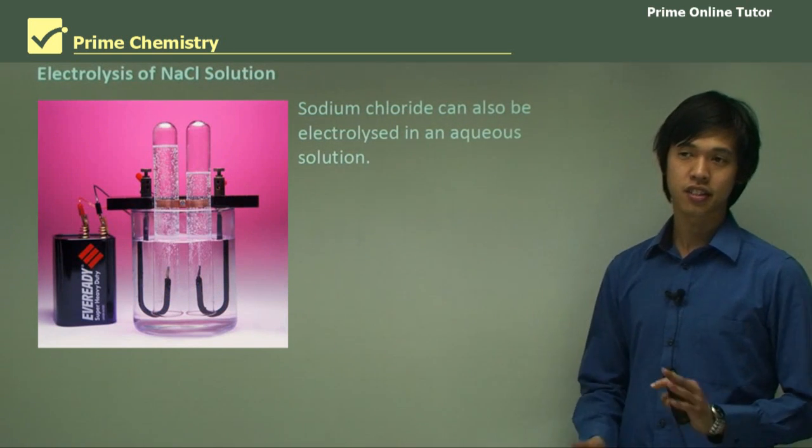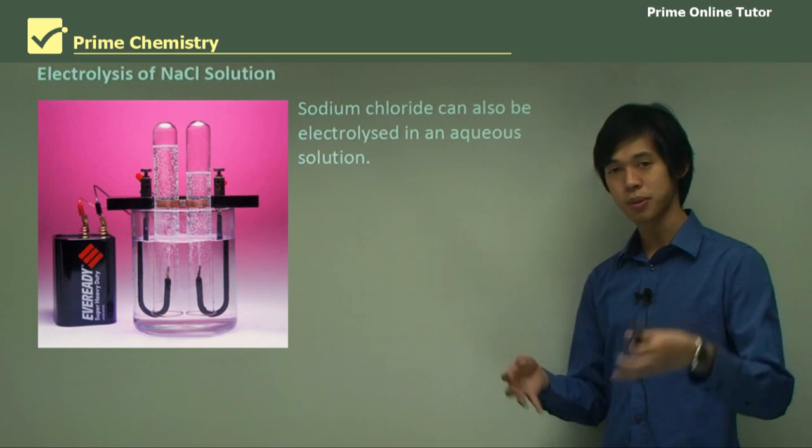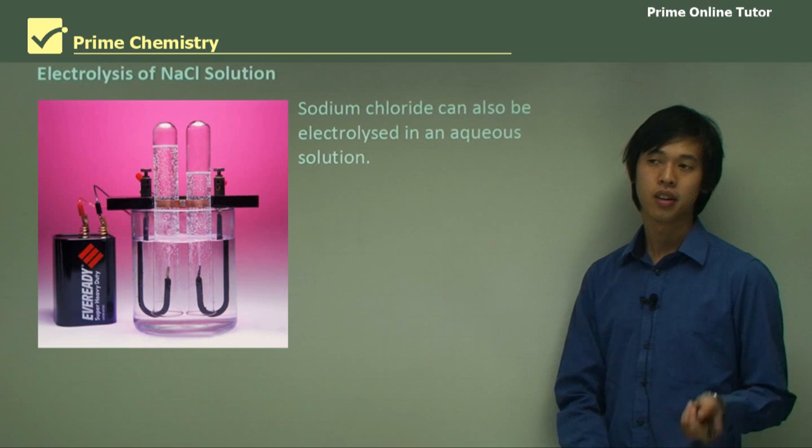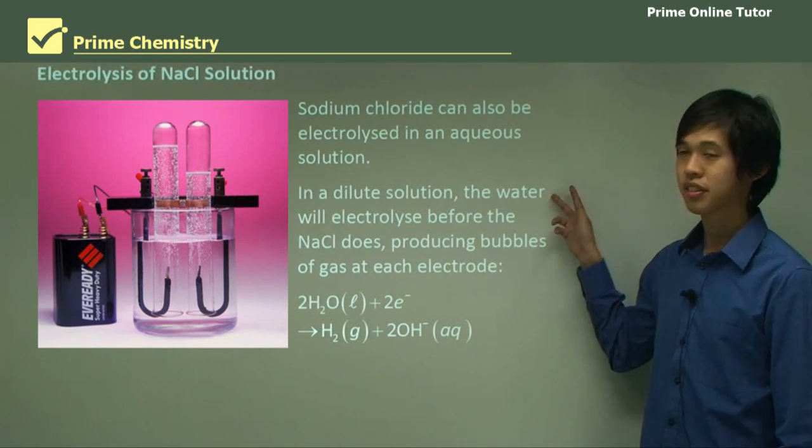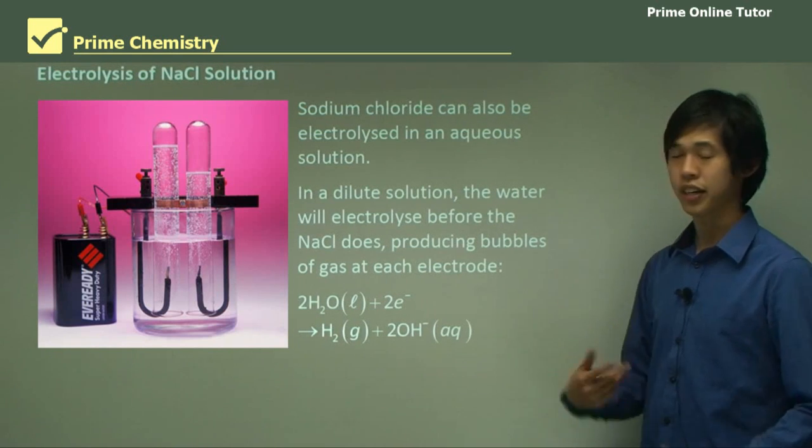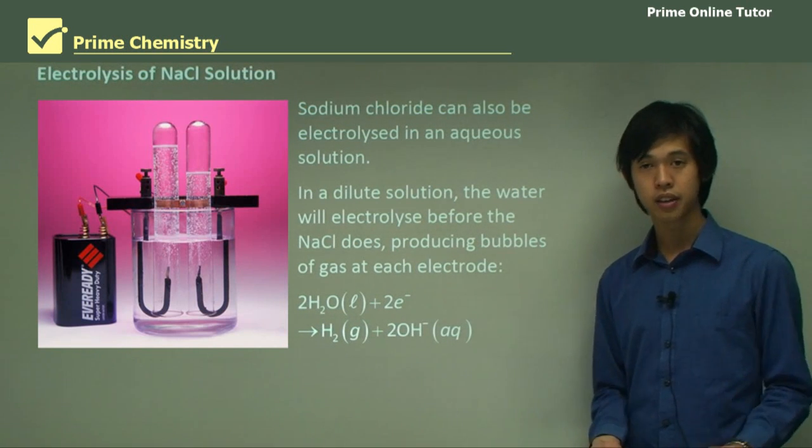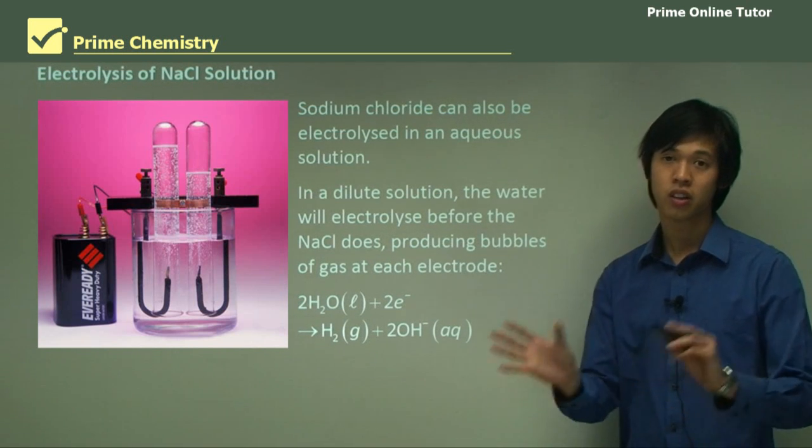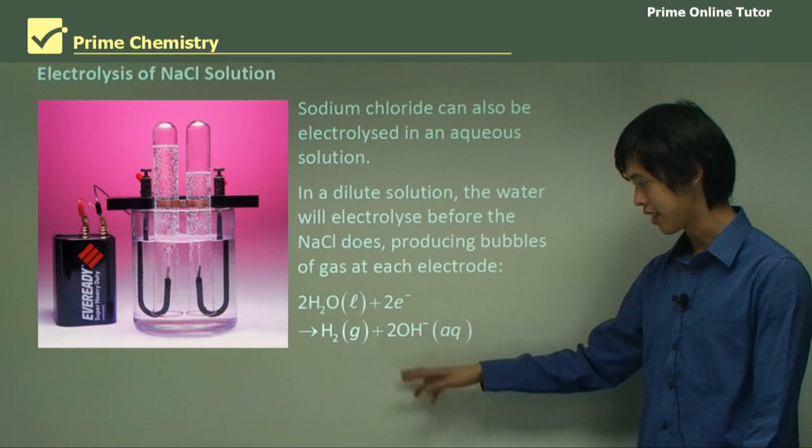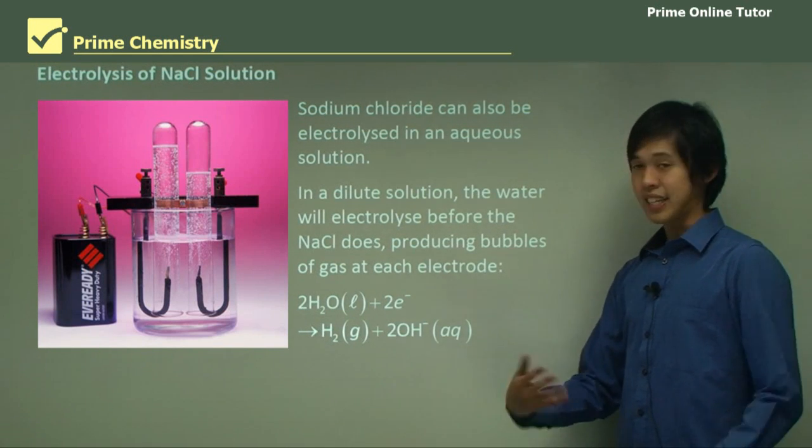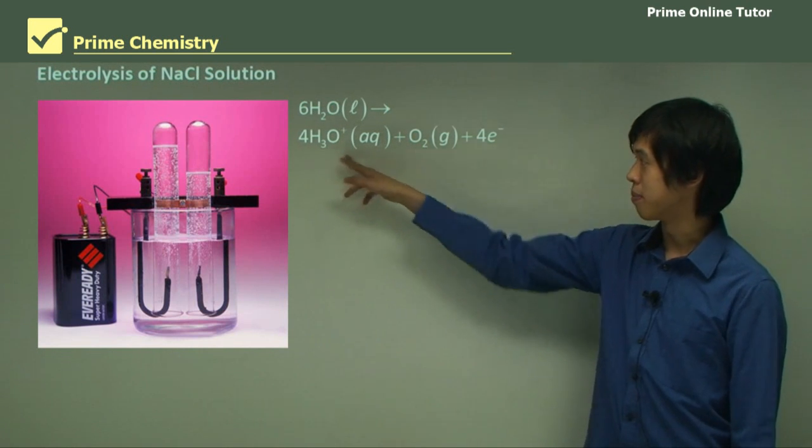Now the difference is that when we had the molten case, it was really easy to determine the products because there's only one thing in there. But now if we put the sodium chloride in water and try to electrolyze it, there will be different products because of the way the water interacts with the electricity. In a dilute solution, the water will electrolyze before the NaCl does, producing bubbles of gas at each electrode. The water plus two electrons forms hydrogen gas and 2OH-. That can happen at the cathode. And this one can happen at the anode: the water turns into hydronium plus oxygen gas and four electrons.